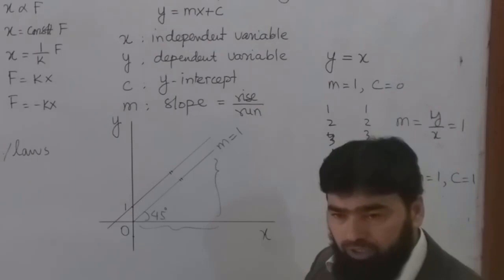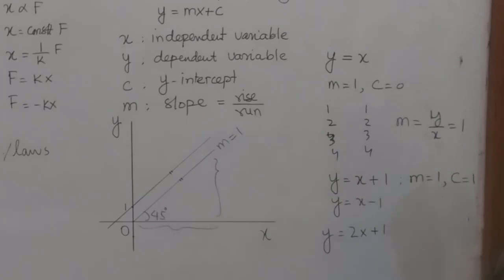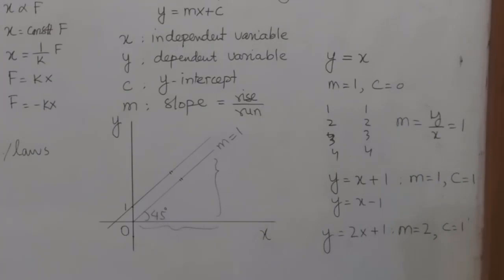But now if I write an equation y equals 2x plus 1, what does it mean? It means that the slope is now 2, while the intercept is 1. So the starting point is this one, but the slope is now 2.